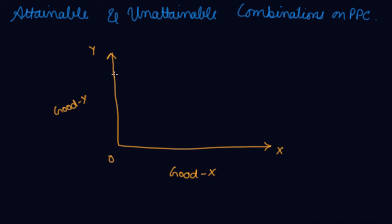This is your production possibility curve which is downward sloping and concave.